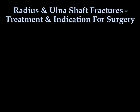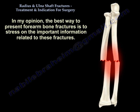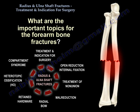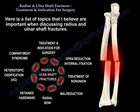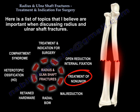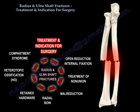Radius and ulnar shaft fractures: treatment and indication for surgery. Forearm bone fractures is a huge topic. The best way to present forearm bone fractures is to stress the important information. Key topics include treatment and indication for surgery, open reduction internal fixation, treatment of non-union, mal-reduction, radial bow, retained hardware, and complications such as heterotopic ossification and compartment syndrome.